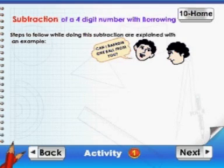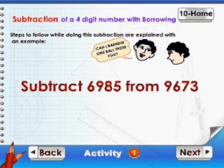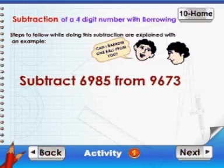Subtraction of a 4-digit number with borrowing. The steps to follow while doing this subtraction are explained with an example. Subtract 6,985 from 9,673.